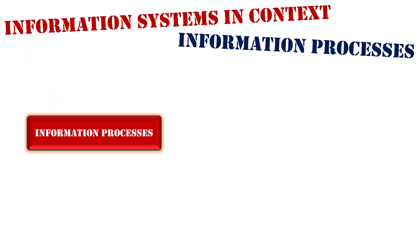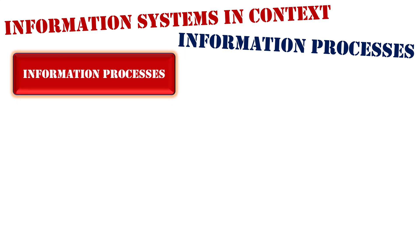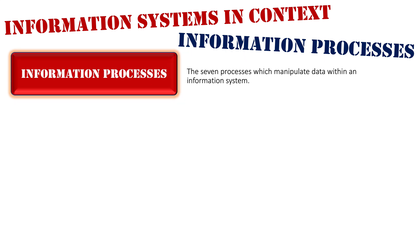There are seven information processes, which manipulate data within an information system. They're not exactly in a strict order, but they're kind of in an order, and they do overlap in areas. You'll understand more of what I mean as we go through them.